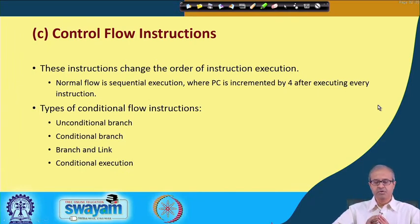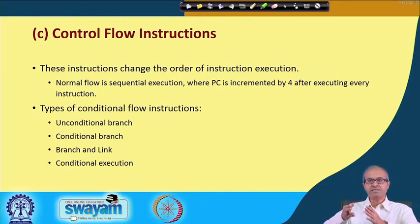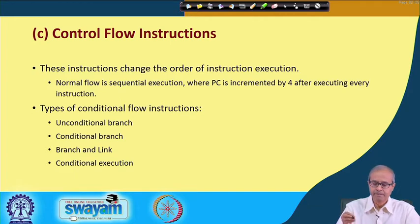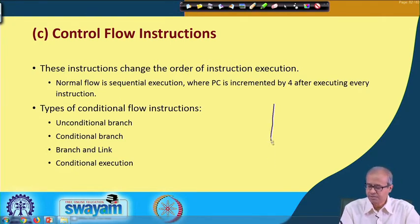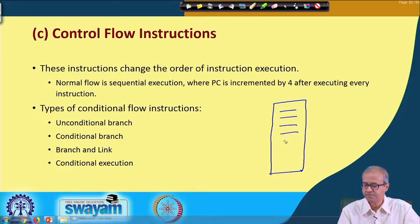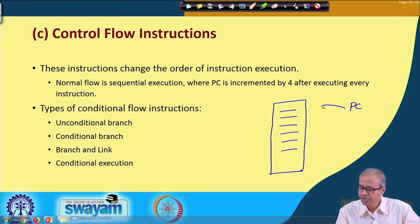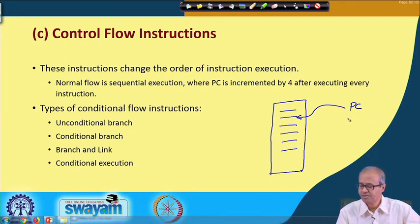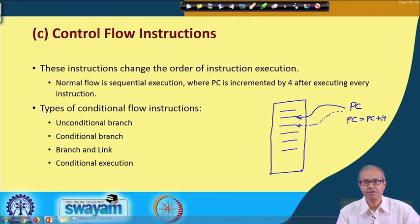Control flow instructions are those which change the sequence of instruction execution. In the normal flow of execution, instructions are stored one after the other in memory. The program counter points to the next instruction to be executed, so whenever one instruction finishes execution you increment PC by 4, since each instruction is of size 32 bits — that means 4 bytes.